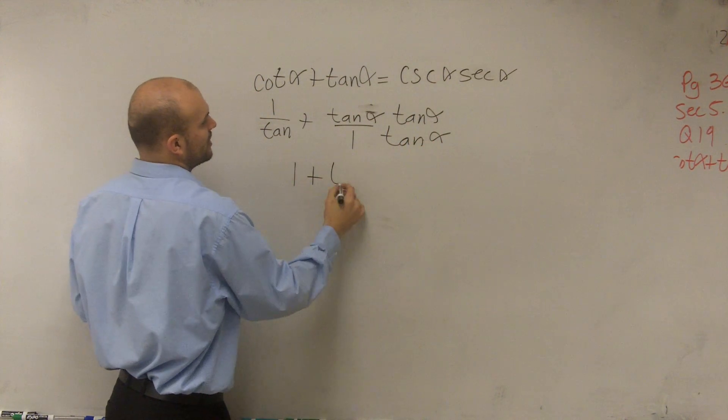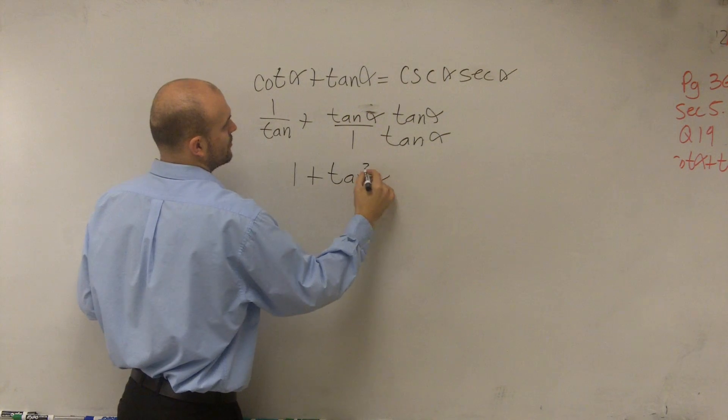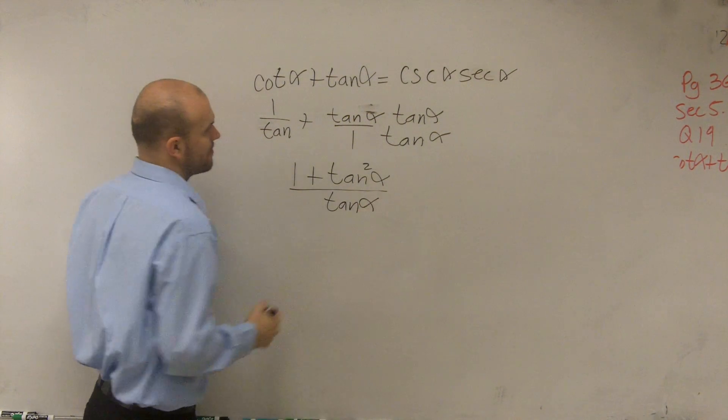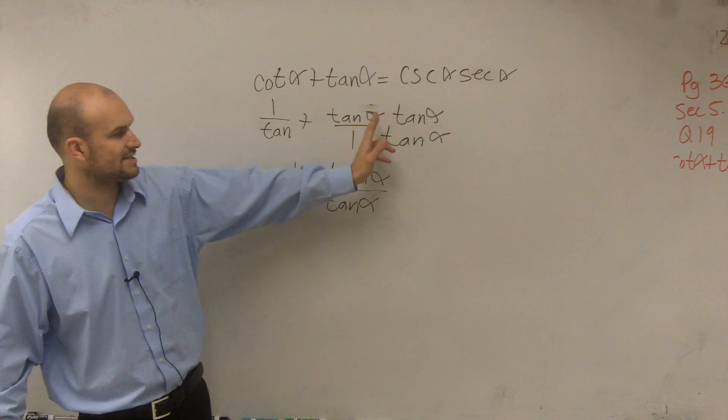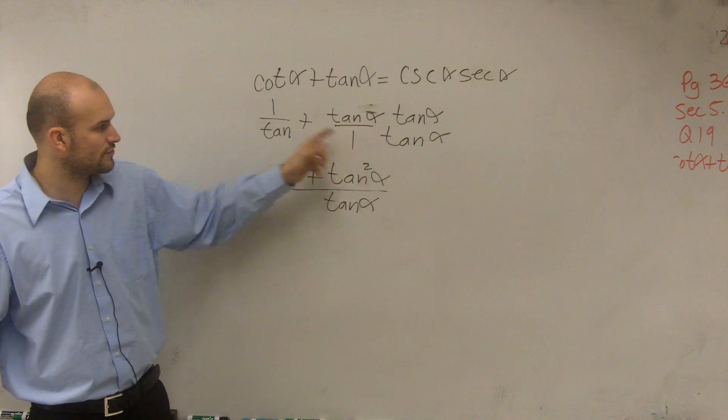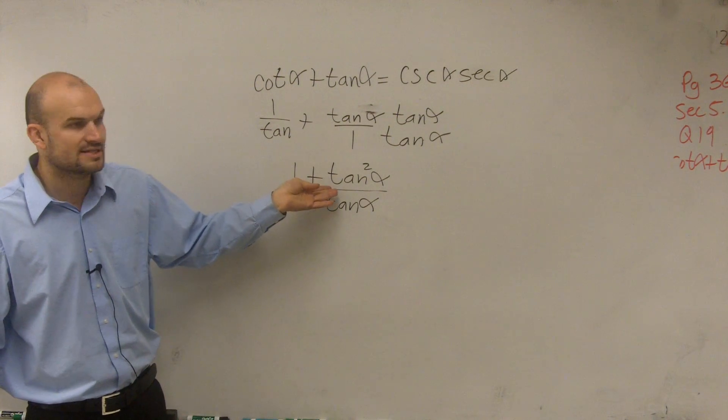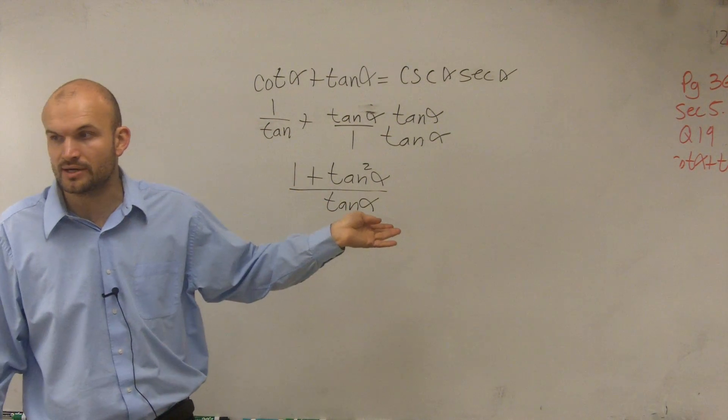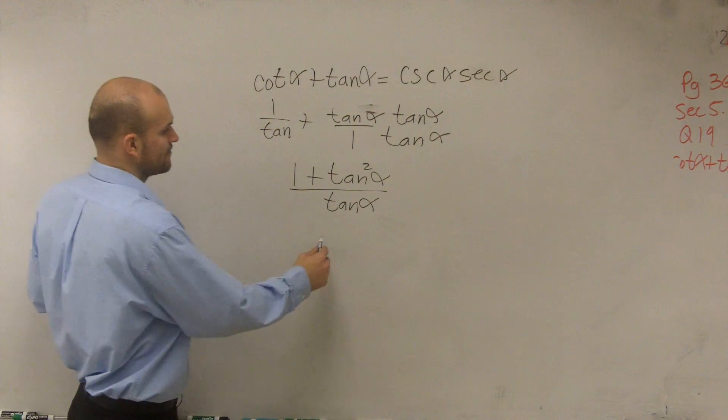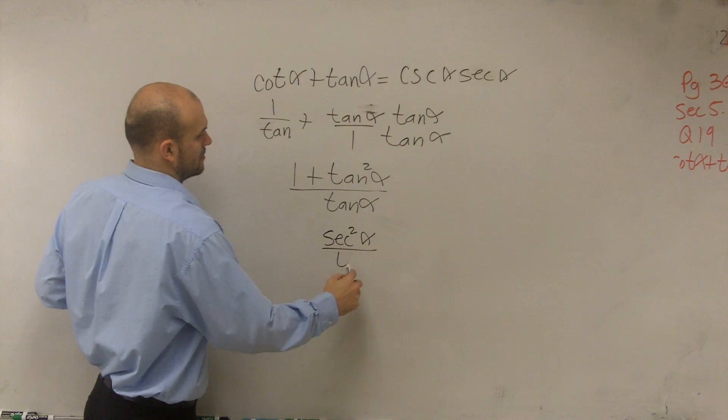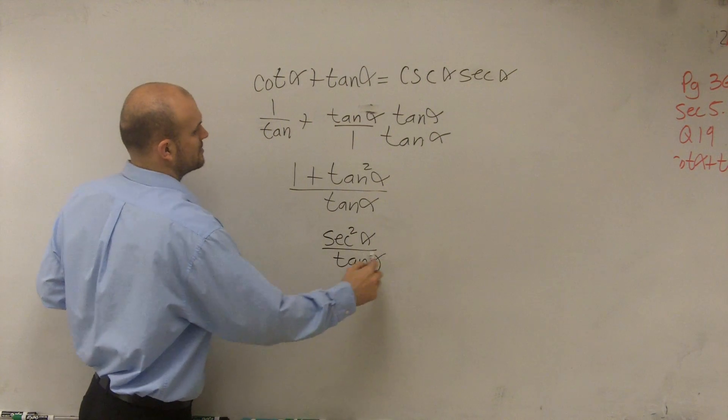Therefore, you're left with 1 plus tangent squared of alpha over tangent of alpha. Because when you multiply this, you get tangent squared, so plus 1 over your common denominator of tangents. Then, you can convert 1 plus tangent squared into secant squared over tangent of alpha.